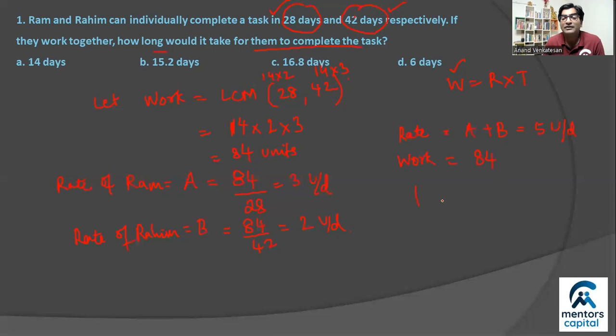Which means time taken should be nothing but work upon rate, that is 84 divided by 5, which will be 16.8 days. So the correct answer to this question is option C.